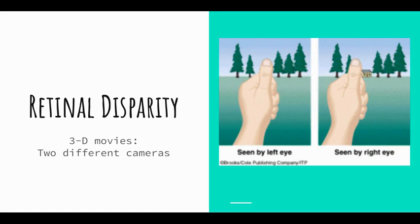In 3D movies, they use two different camera angles and have you wear glasses that give each eye a different camera view, making it look like things are coming out at you — because they're manipulating camera angles to get your eyes to perceive depth through retinal disparity.